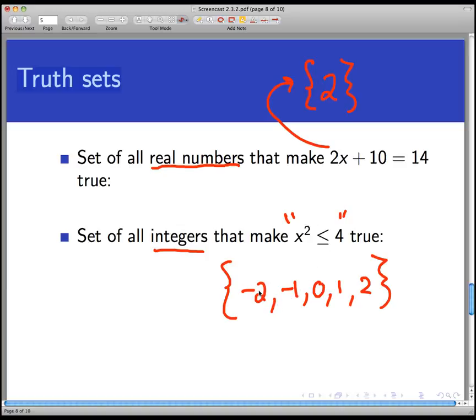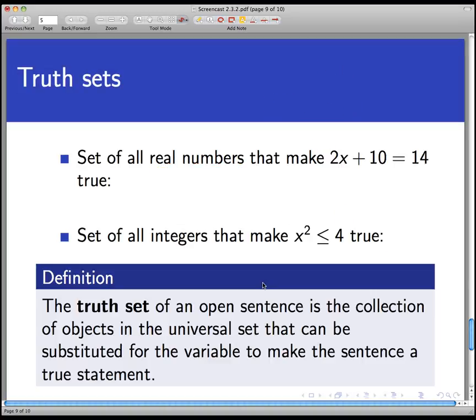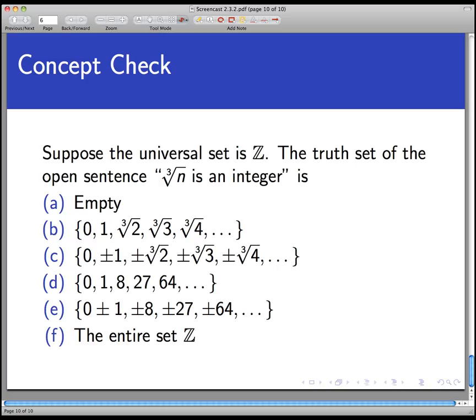So what we're doing here is we're taking an open sentence and looking for the variable values from the universal set that makes the open sentence into not just a statement but a true statement. That set is generally known as the truth set of an open sentence. Again, just the collection of objects from the universal set that can be substituted in for the variable to make the sentence a true statement. So let's end off with a concept check to see how well you understand the notions of open sentences and truth sets.